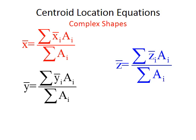Here's a gotcha: if you have a complex shape that starts as a square and you're cutting out or removing a circle, semicircle, or other part, you would subtract the x-bar A sub i product. This is true for the y-coordinate and, for three-dimensional objects, the z-component as well.